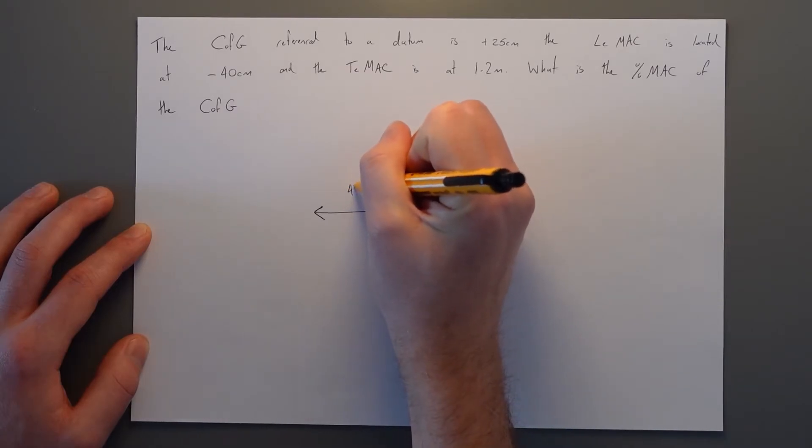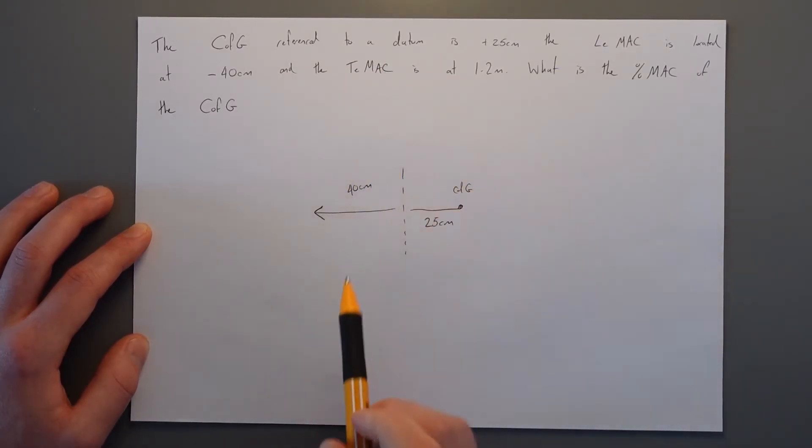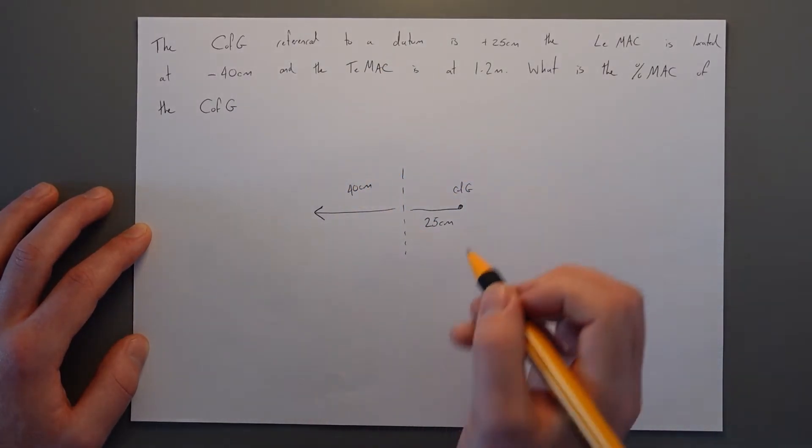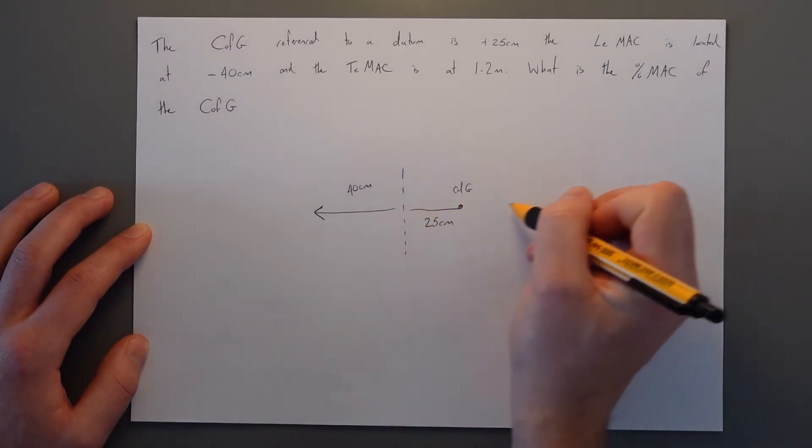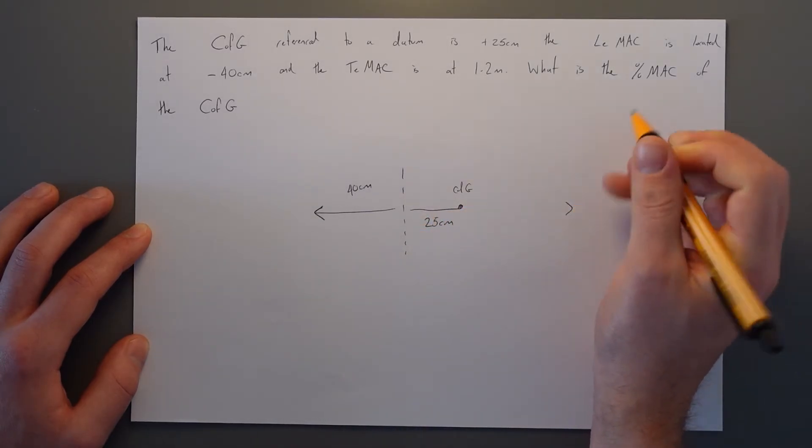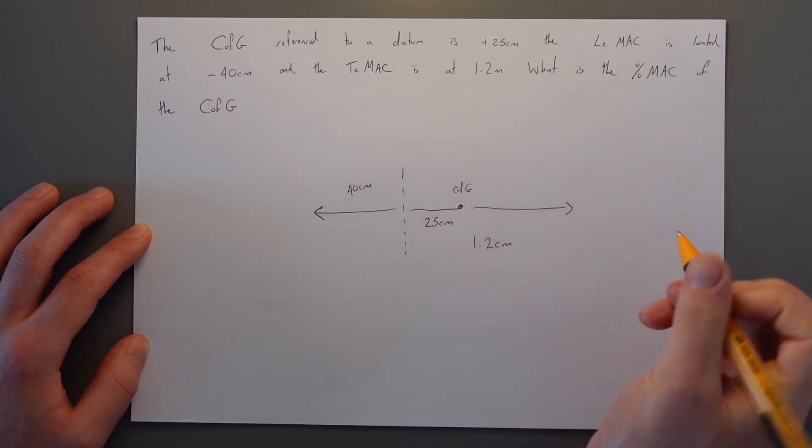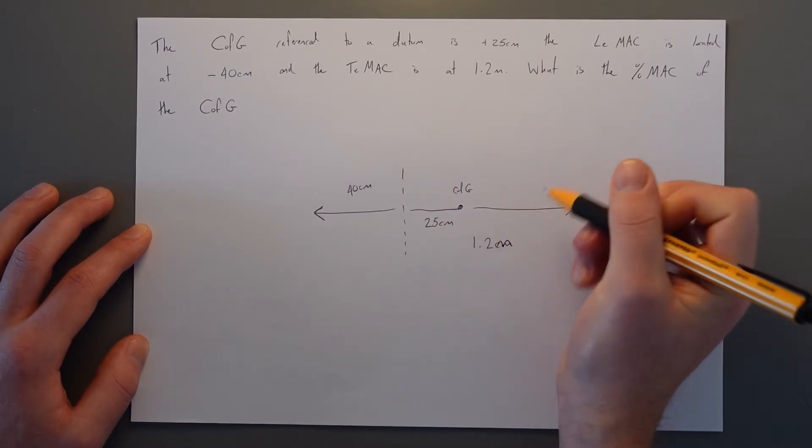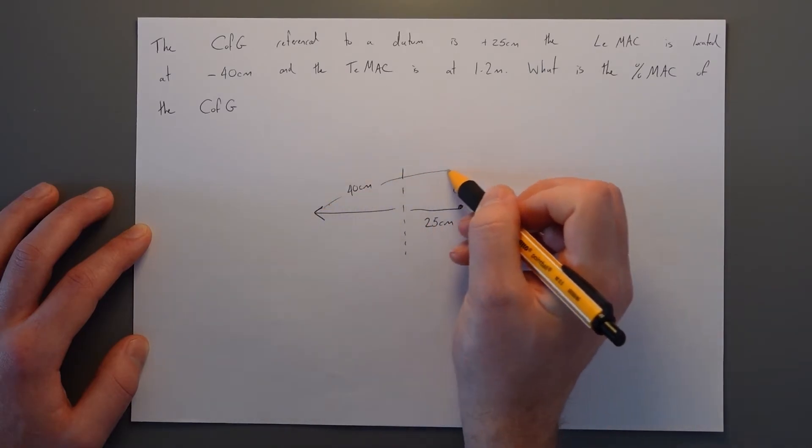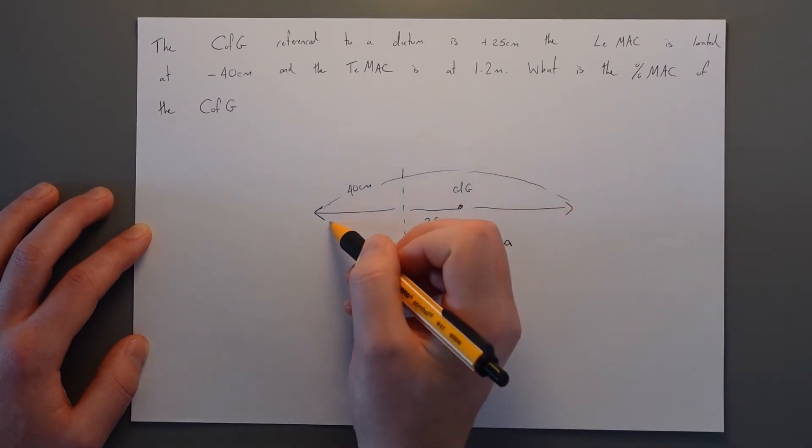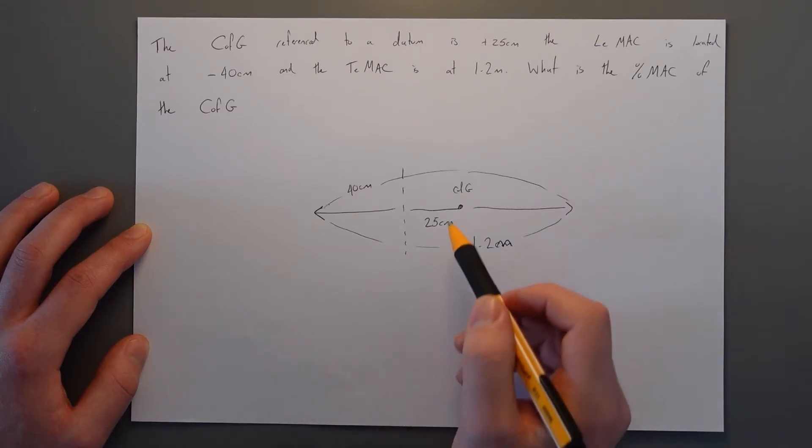That's at 40 centimetres. And our trailing edge MAC is located at 1.2. So that's going to be over here and this distance in here is 1.2 metres. So we have this fictional wing looks something along the lines of that with our centre of gravity along it like that.